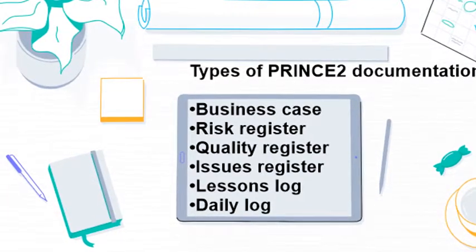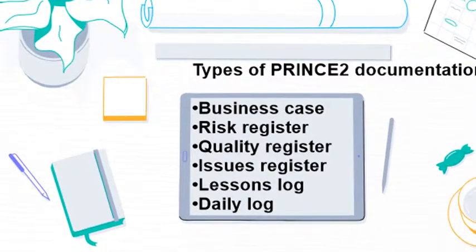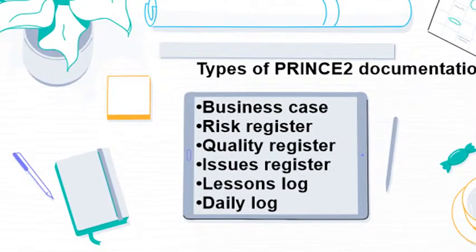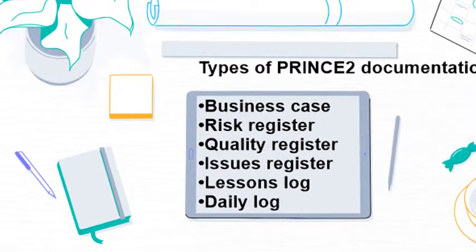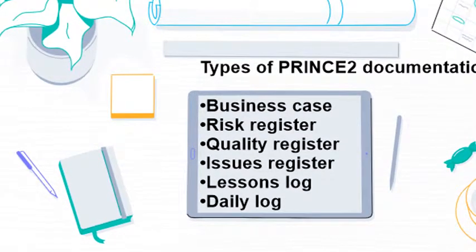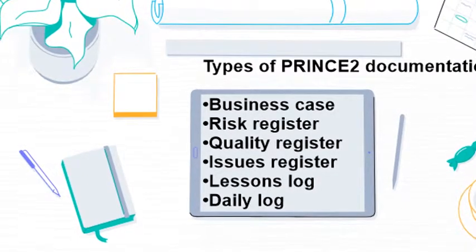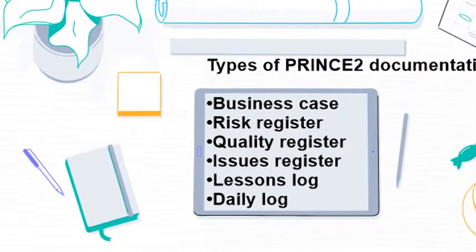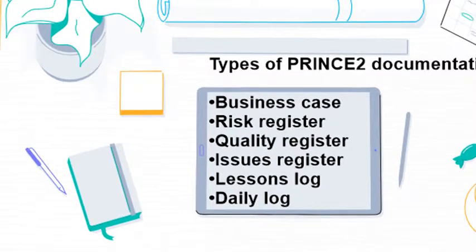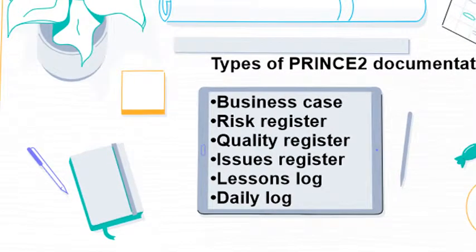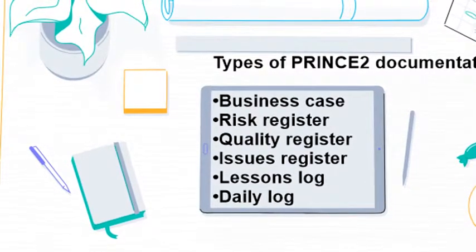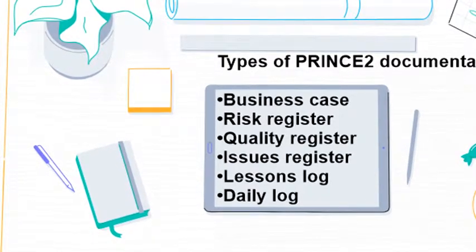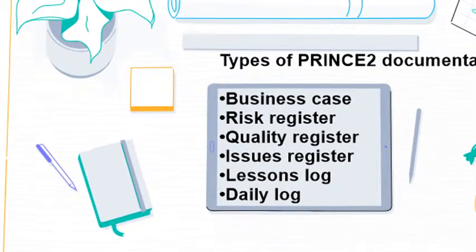The Quality Register is a running log of quality checks that ensure deliverables meet expectations. The Issues Register is a list of problems and concerns from project team members. The Lessons Log contains notes on lessons learned to apply to the next work stage and/or future projects. The Daily Log is a diary written by the project manager that reports activity and progress.